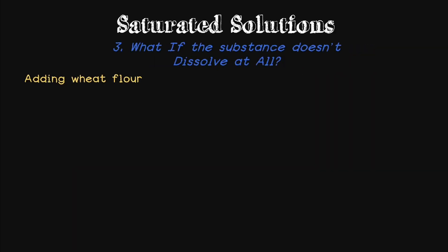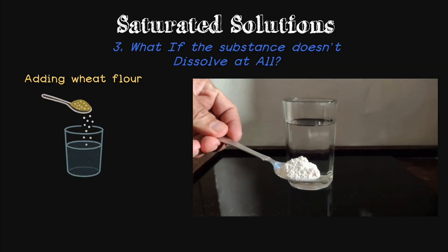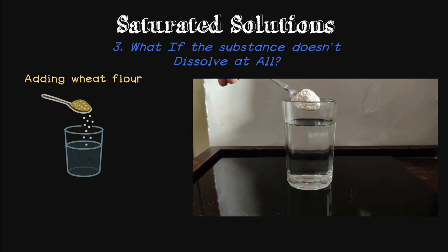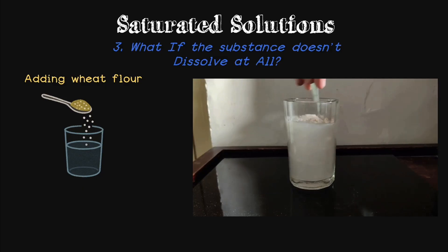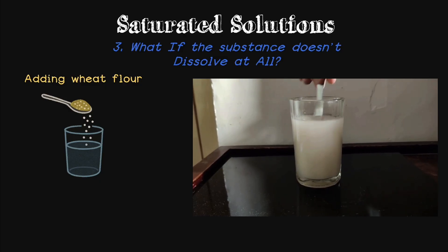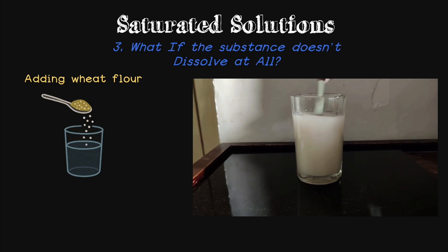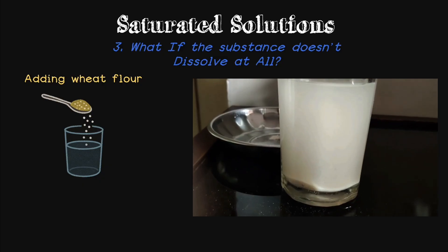What if the substance doesn't dissolve at all? How does saturation come into picture for them? For that, let's try adding wheat flour in the water. As soon as you add wheat, you can see that instead of dissolving in the water, it is spread throughout the water without getting dissolved. You can try to keep stirring it with all the force you've got, but you will see that it is not getting dissolved at all. As you wait for some time and allow it to settle down, you will see that most of the wheat just settles down at the base — it does not get dissolved.